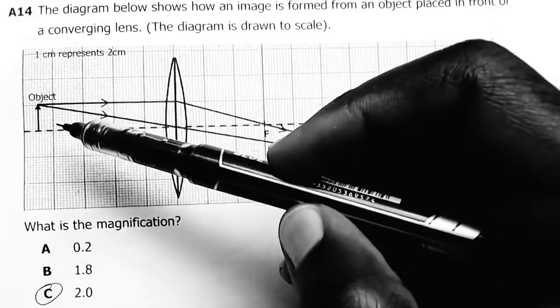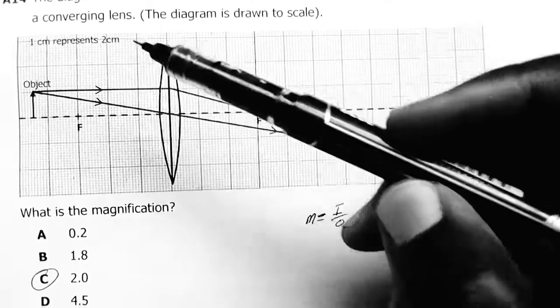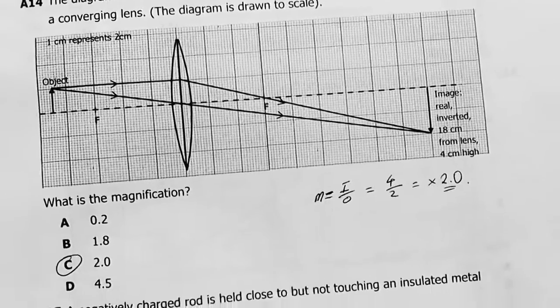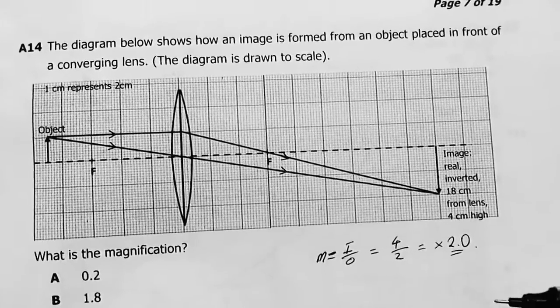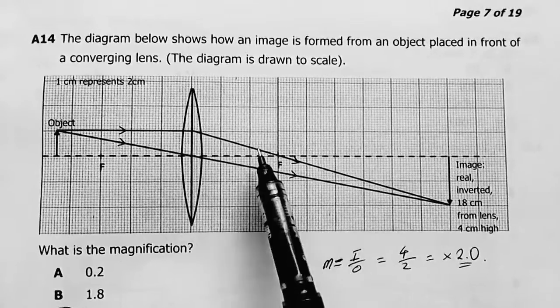And when you look at our object, this is one centimeter, meaning it's actually a 2 because one centimeter represents two centimeters. So image over object, giving me a 2, if not so. You can also refer to linear magnification.